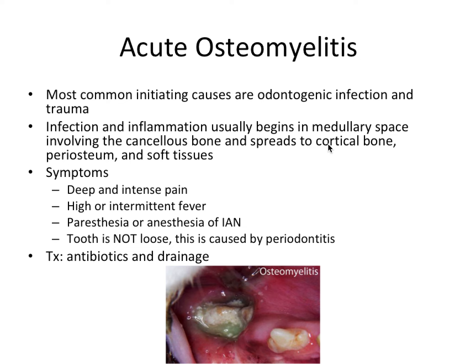If an infection doesn't spread to involve the cortical bone, we're not really going to see anything radiographically. For something acute like this, there's a clinical photo of a dog's molar showing this really nasty separation that can occur around a tooth infected with bone involvement. The body can mount a pretty severe response. Symptoms include deep and intense pain, intermittent fever — and fever is a systemic sign. FML stands for fever, malaise, and lymphadenopathy, your cardinal systemic signs, meaning the infection is affecting the entire body.